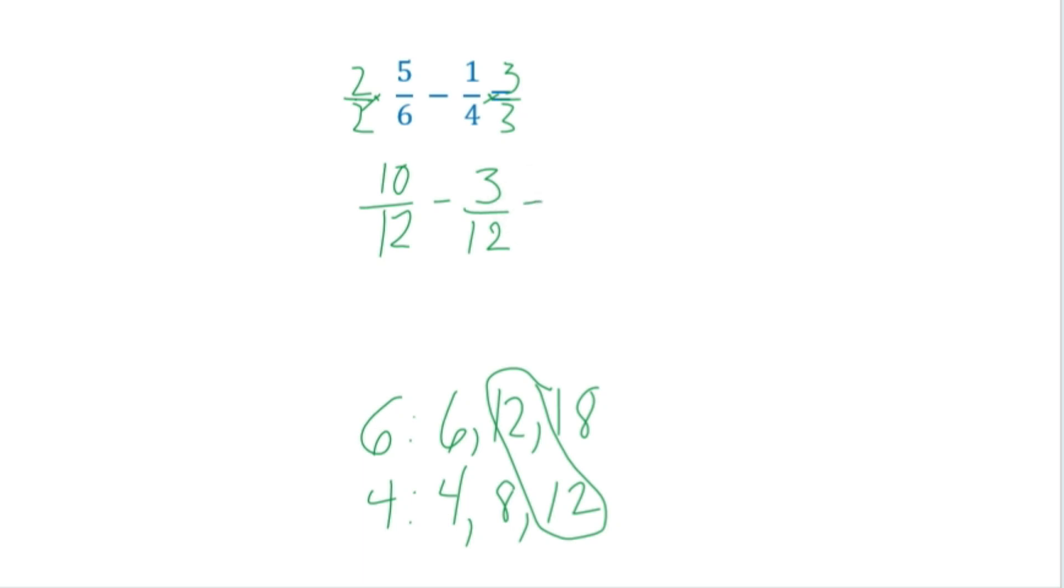So now I have my common denominator of 12, and I can just subtract my numerator. I would get 7 over 12. So that's how to get a common denominator. You might want to use your least common multiple strategy. And when you have your common denominator, you can subtract across the numerator and then leave the denominator the same.